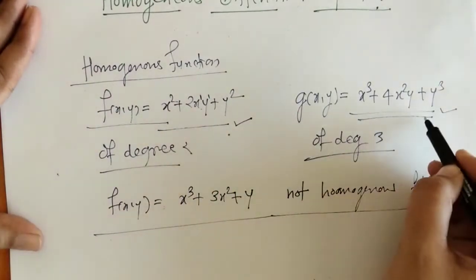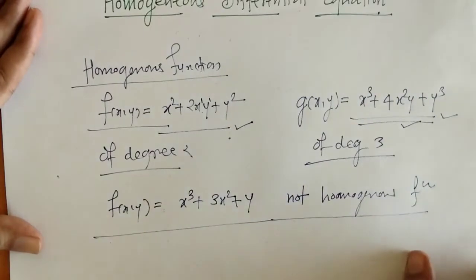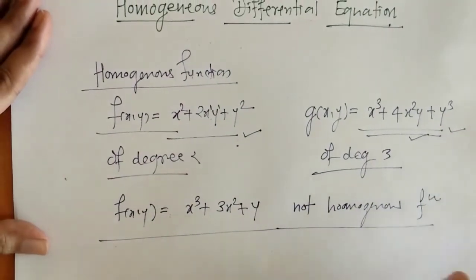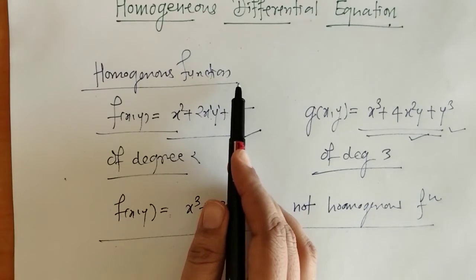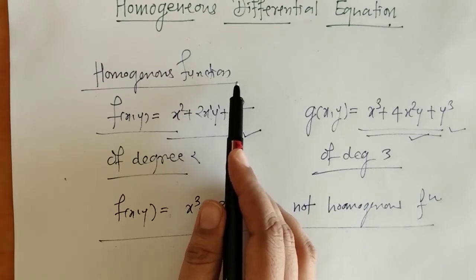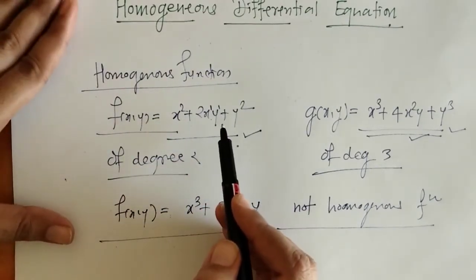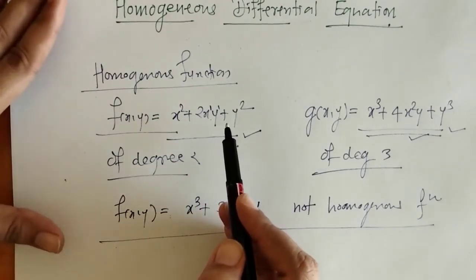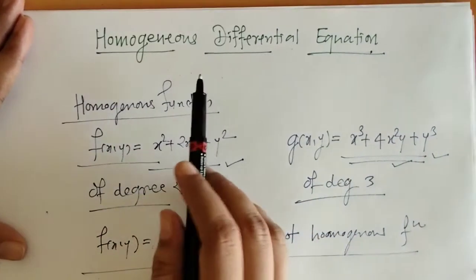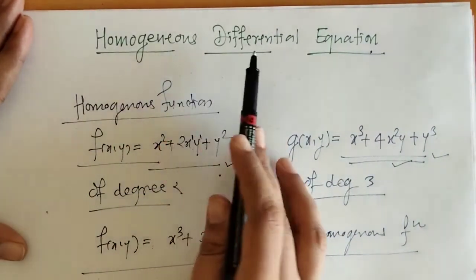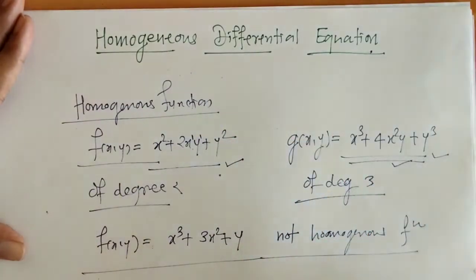So a homogeneous function is one in which the degree of each term is the same. Now we are ready to see what a homogeneous differential equation is.